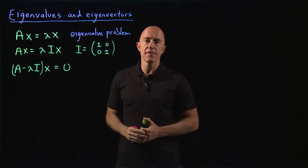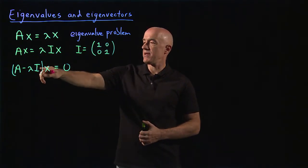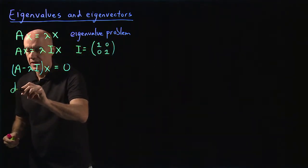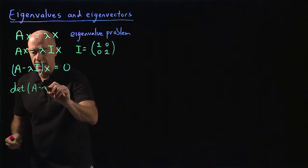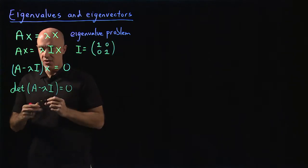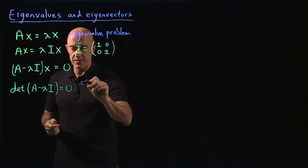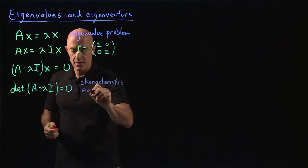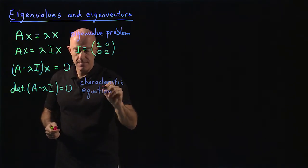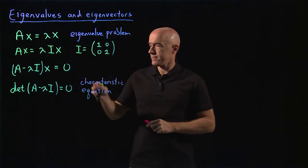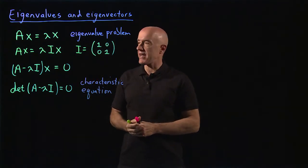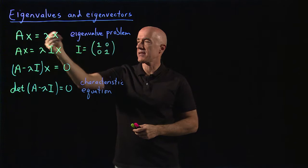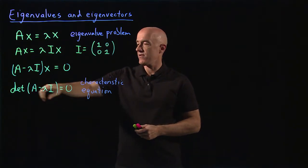So we don't want this matrix to be invertible. That means the determinant of this matrix has to be zero. We write the determinant of A minus lambda I equals zero. This is called the characteristic equation of the matrix A. That's basically the essence of the eigenvalue problem — to determine the lambdas such that Ax equals lambda x, you need to solve this equation.